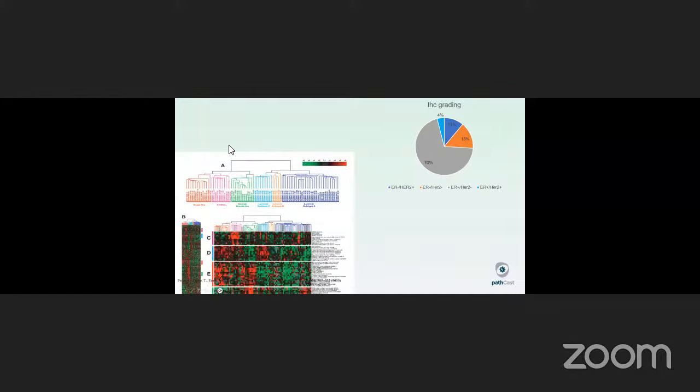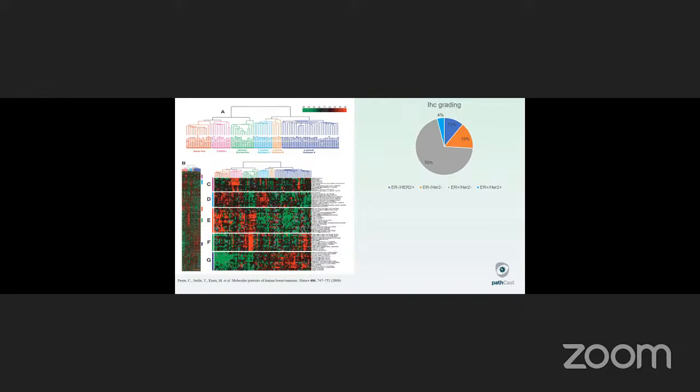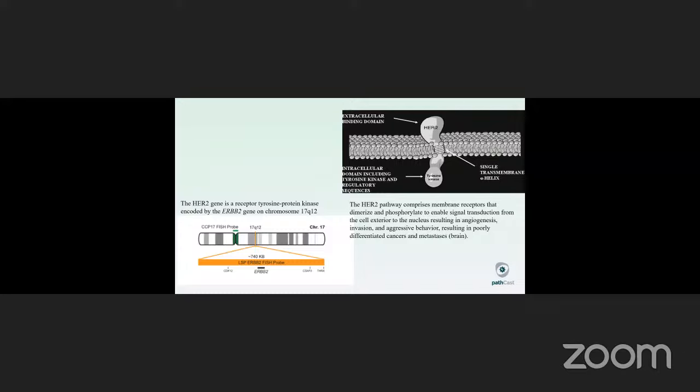In 1999, this was more elegantly demonstrated by the landmark study published by Perou et al, that revolutionized our method of classifying breast cancers into categories such as basal, luminal, and HER2 positive. For the purpose of this talk, I will concentrate on the HER2 positive cancers, which comprise approximately 15 to 20% of all breast cancers characterized by HER2 gene overexpression and amplification. The HER2 gene is a receptor tyrosine protein kinase encoded by the ERBB2 gene on chromosome 17q12.